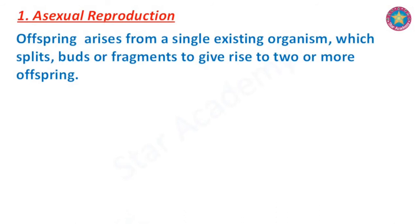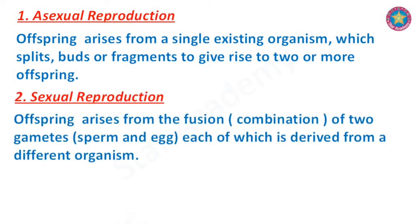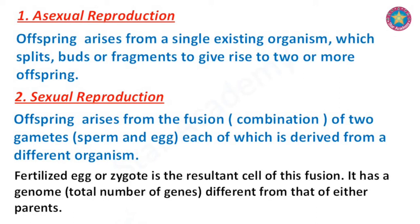The multiplication of species is done by two basic types of reproduction: asexual reproduction and sexual reproduction. In asexual reproduction, the progeny or offspring arises from a single existing organism which splits, buds, or fragments to give rise to two or more offspring. In sexual reproduction, the progeny arises from the fusion or combination of two gametes — sperms and eggs — of multicellular animals. The fertilized egg or zygote is the resultant cell of this fusion.